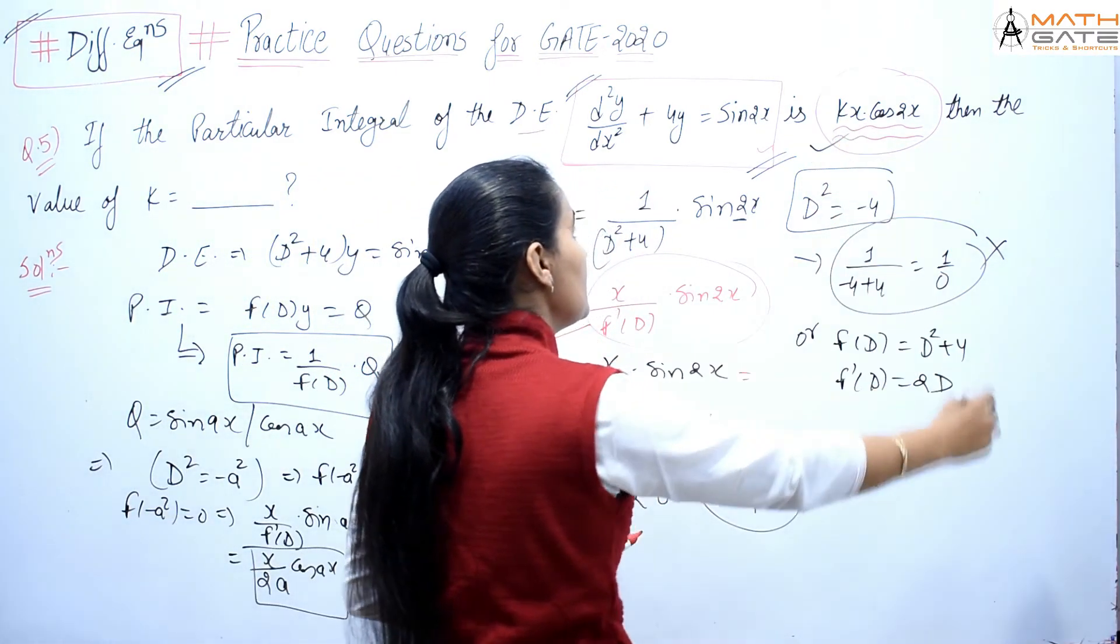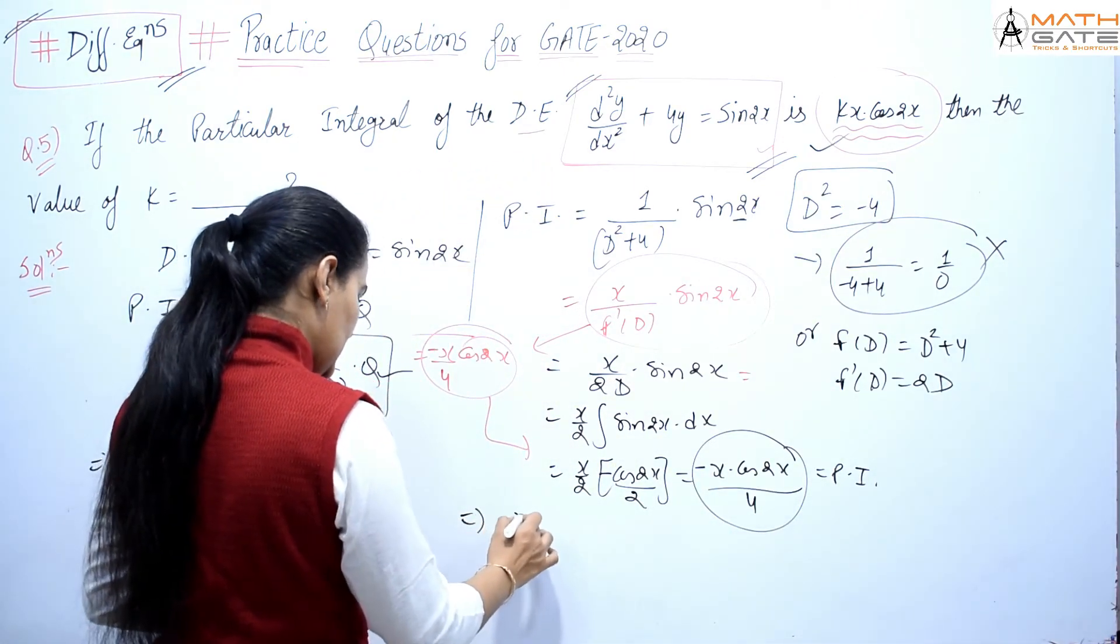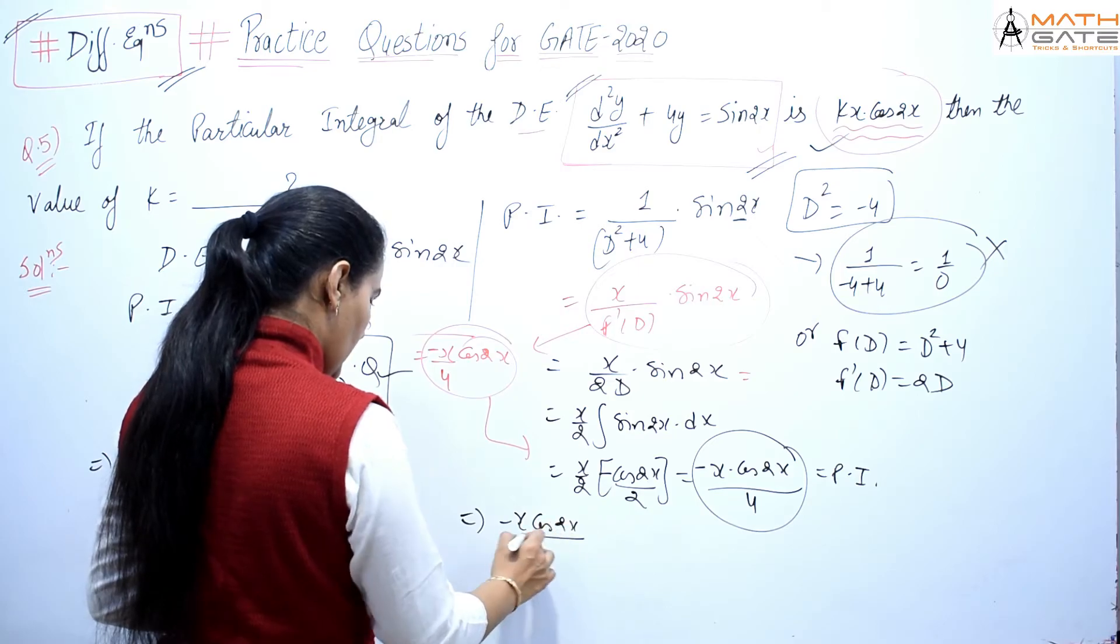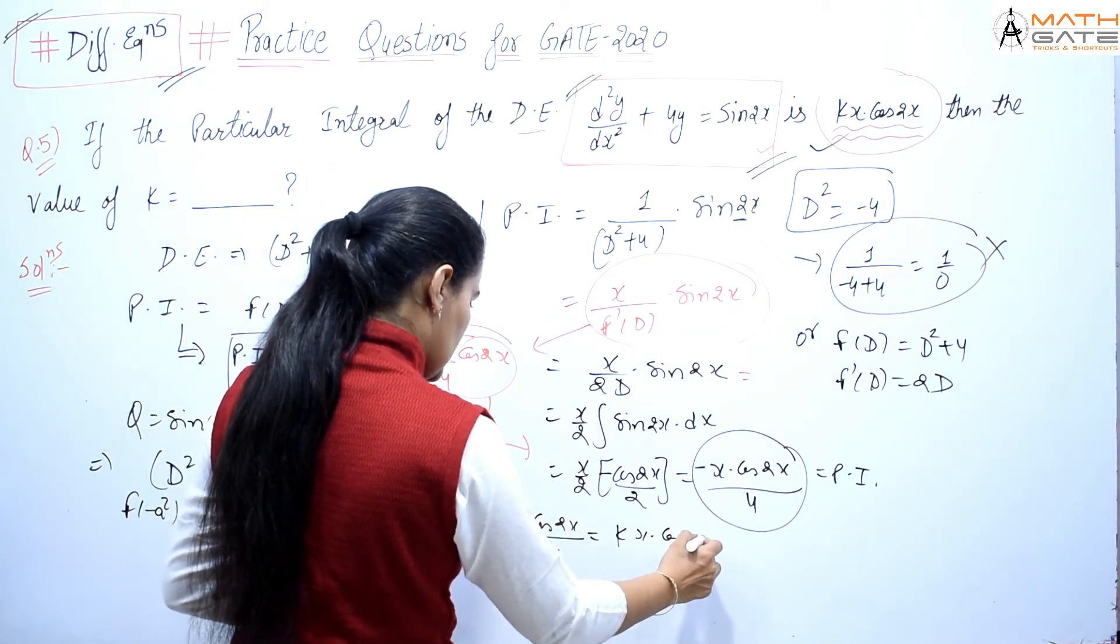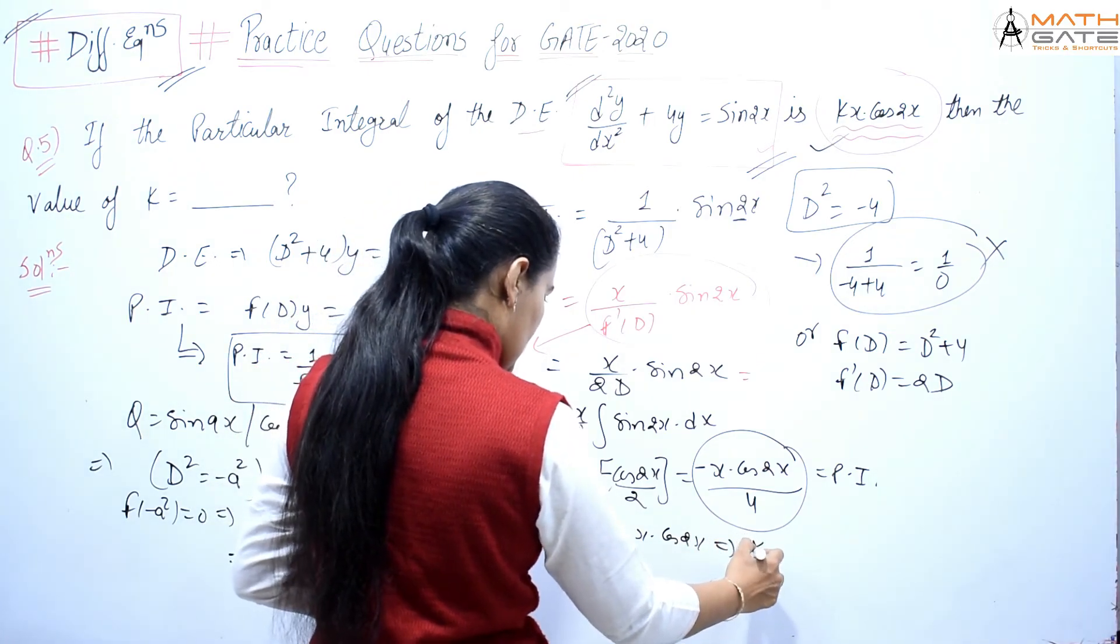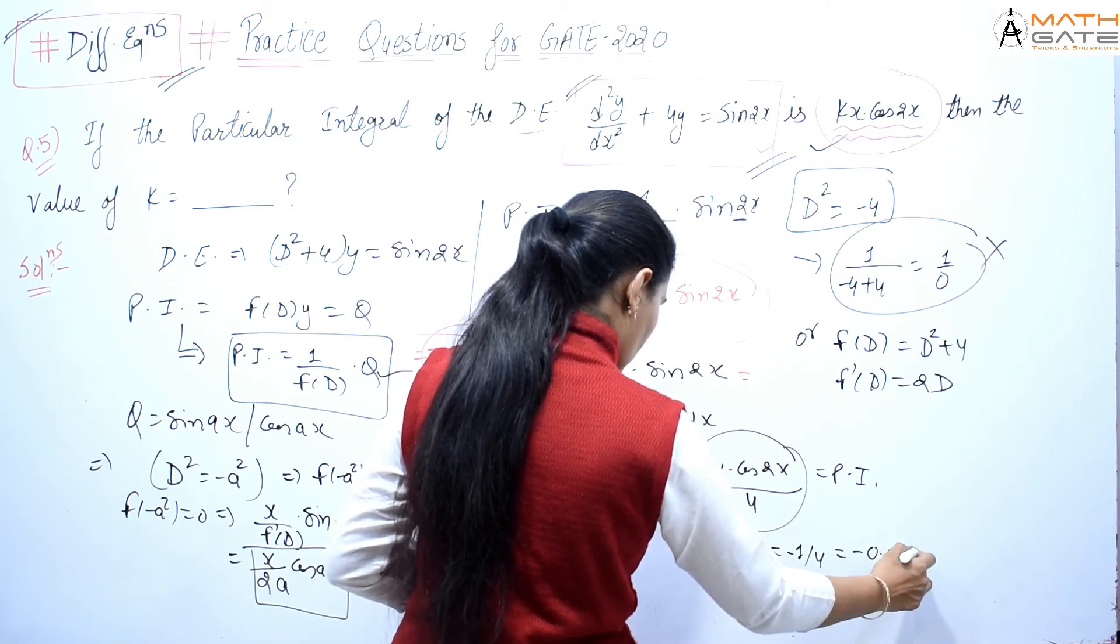But in the question given, this is PI. So we will compare them. By comparing, we can easily see: -x cos(2x)/4 equals k times x cos(2x). So definitely this implies k equals how much? -1/4 means -0.25.